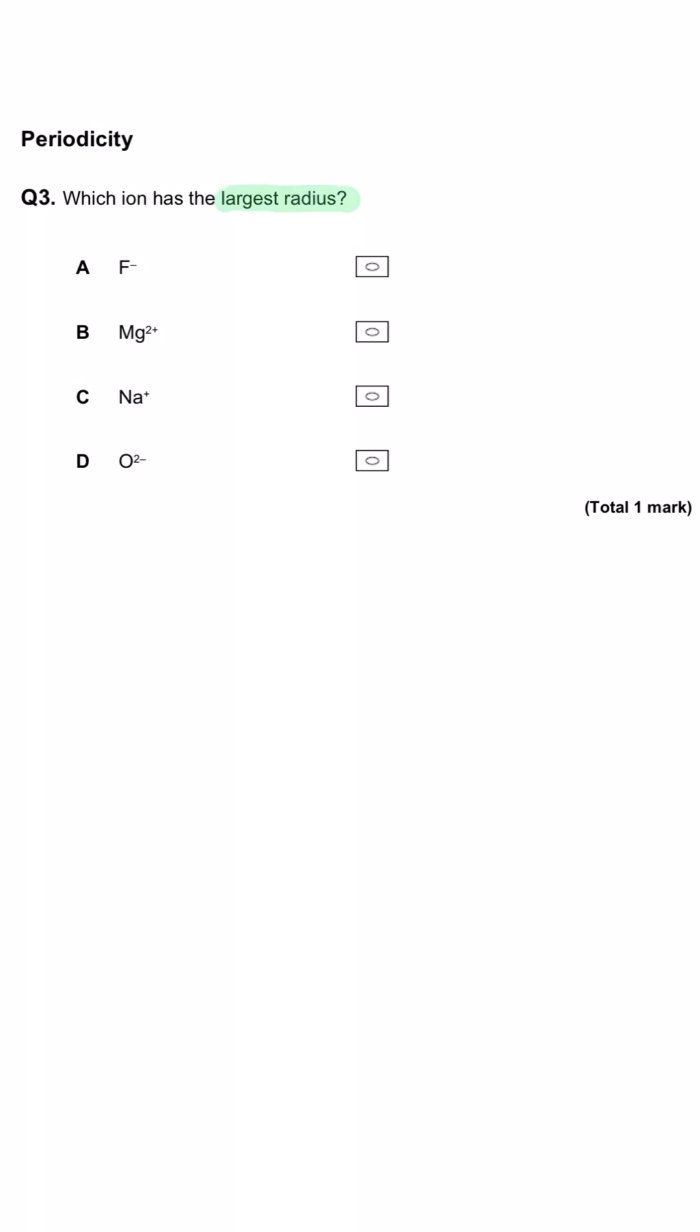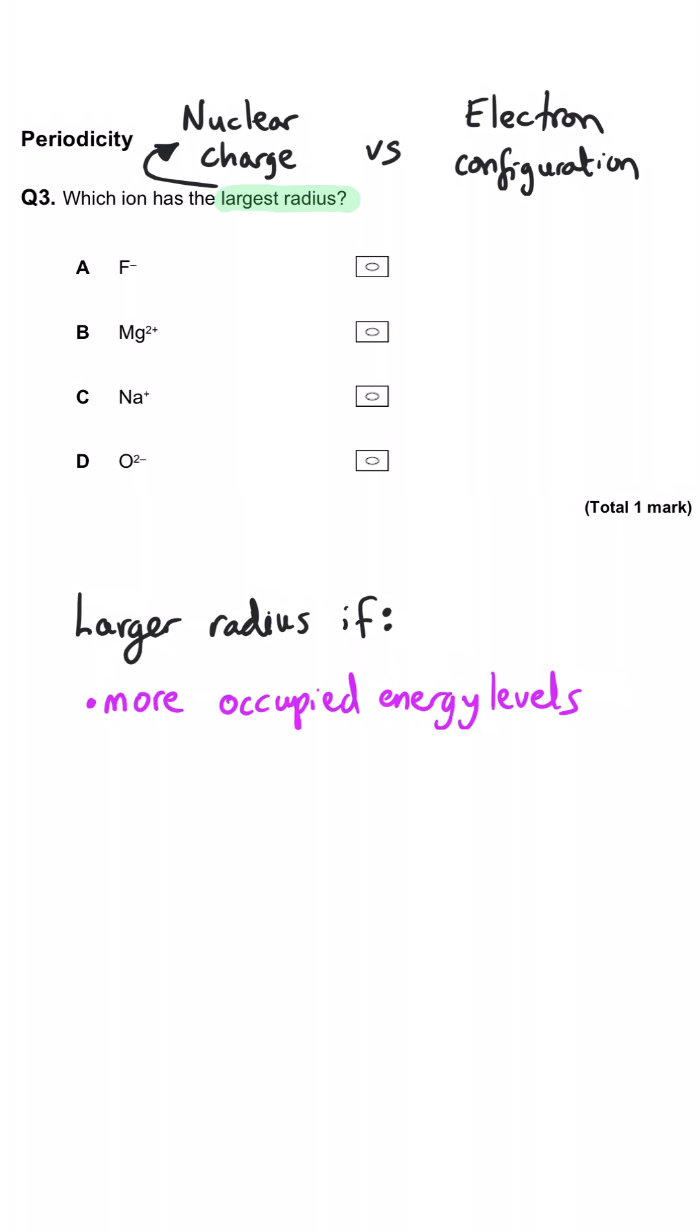Which ion has the largest radius? Well, the radius of an ion is determined by the balance between the nuclear charge and the electron shells that are occupied. If there are more occupied electron shells, it will be a bigger ion. A smaller nuclear charge will be a bigger ion.